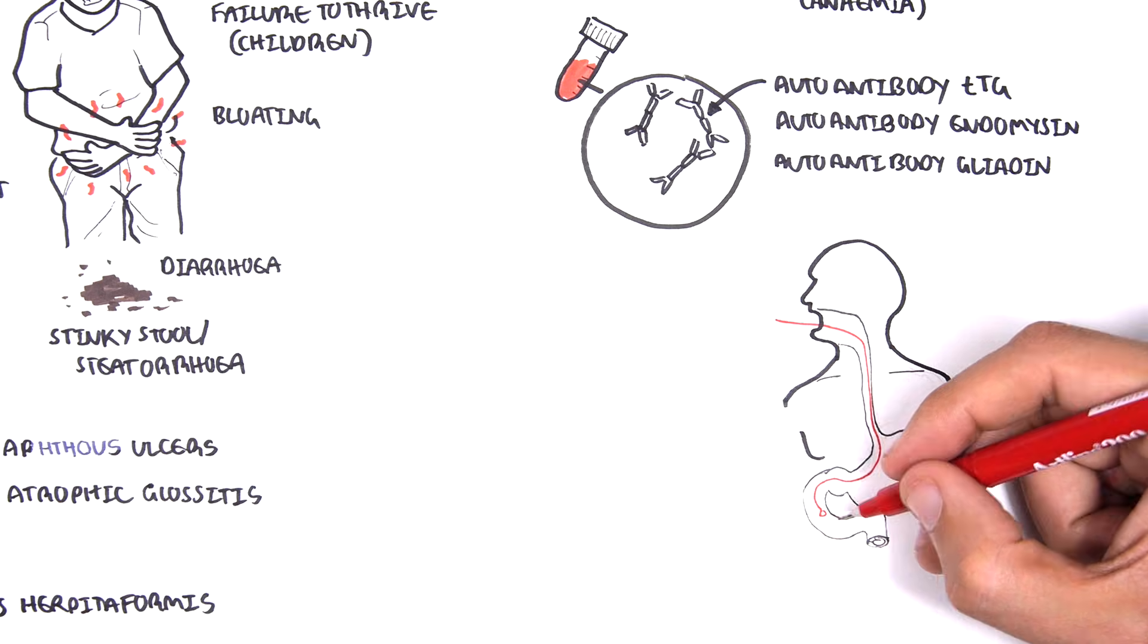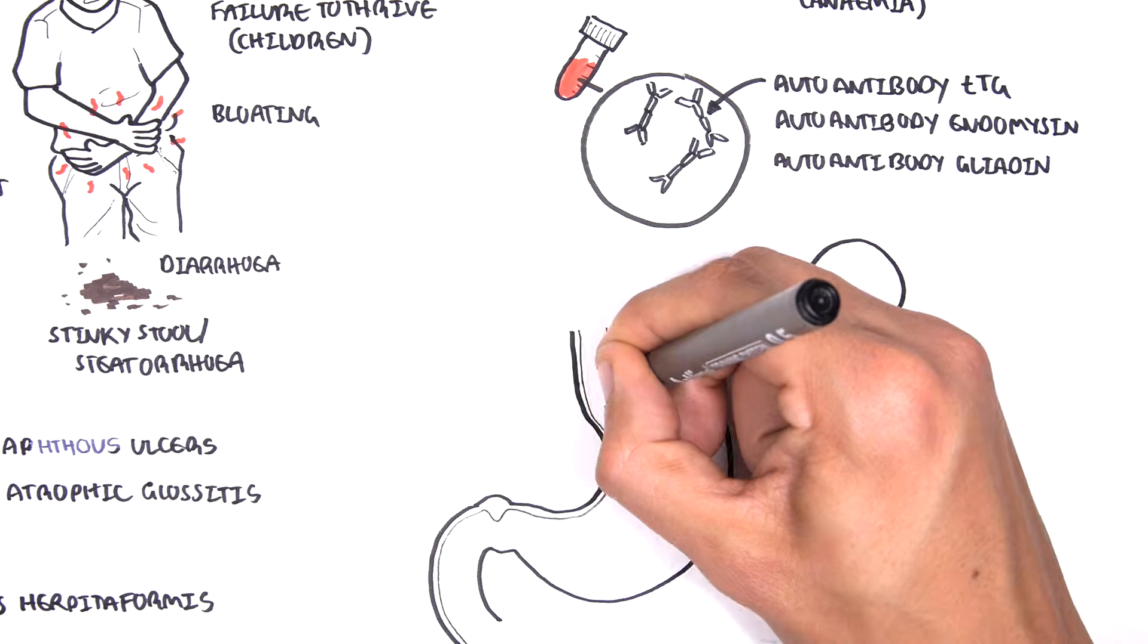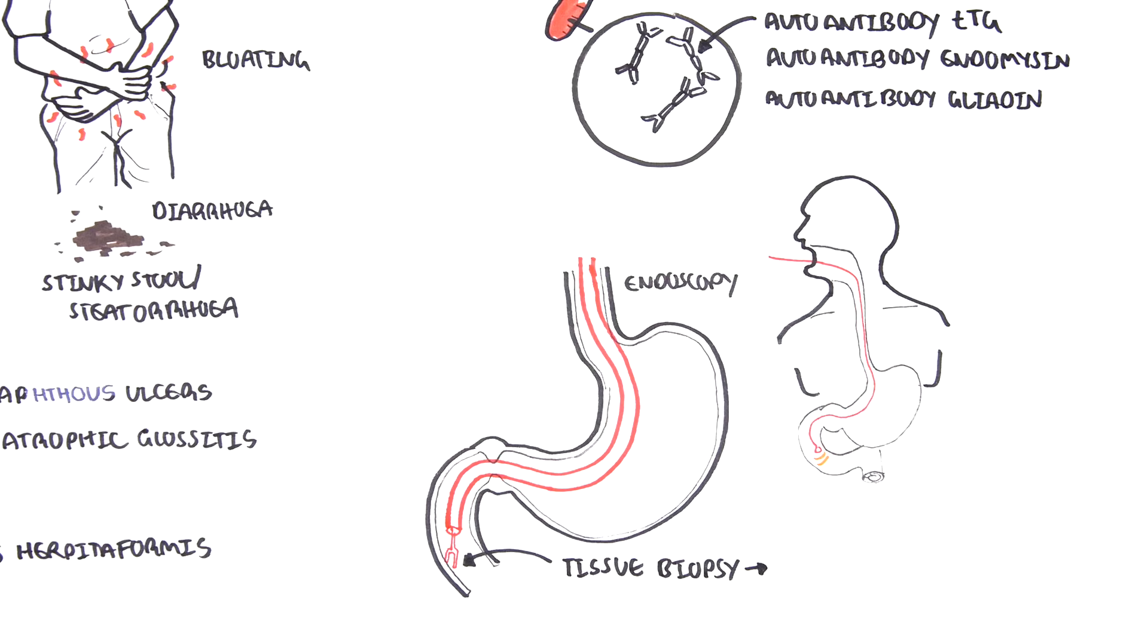Finally, an endoscopy can be performed, and it is gold standard for the diagnosis of celiac disease. This is essentially where a camera is fed through the esophagus down to the small intestine where a tissue biopsy can be taken, and using this tissue biopsy, a diagnosis can be made.